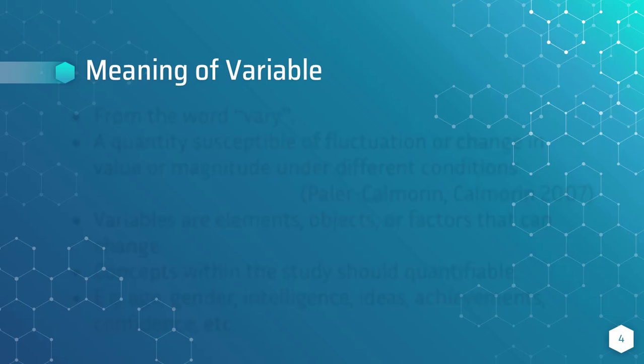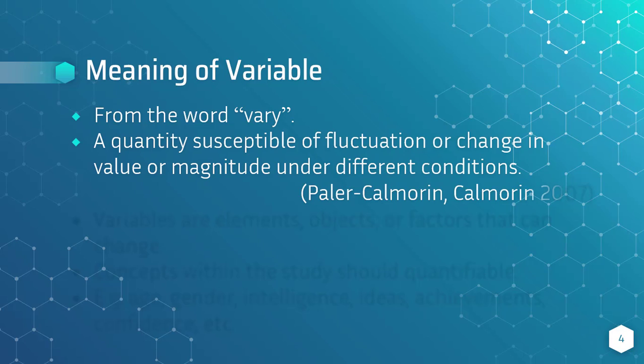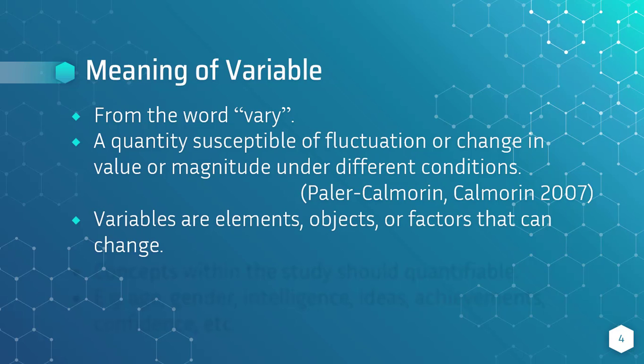Meaning of variable. Variable came from the word 'vary.' It is a quantity susceptible of fluctuation or change in value or magnitude under different conditions. Variables are elements, objects, or factors that can change or may vary.